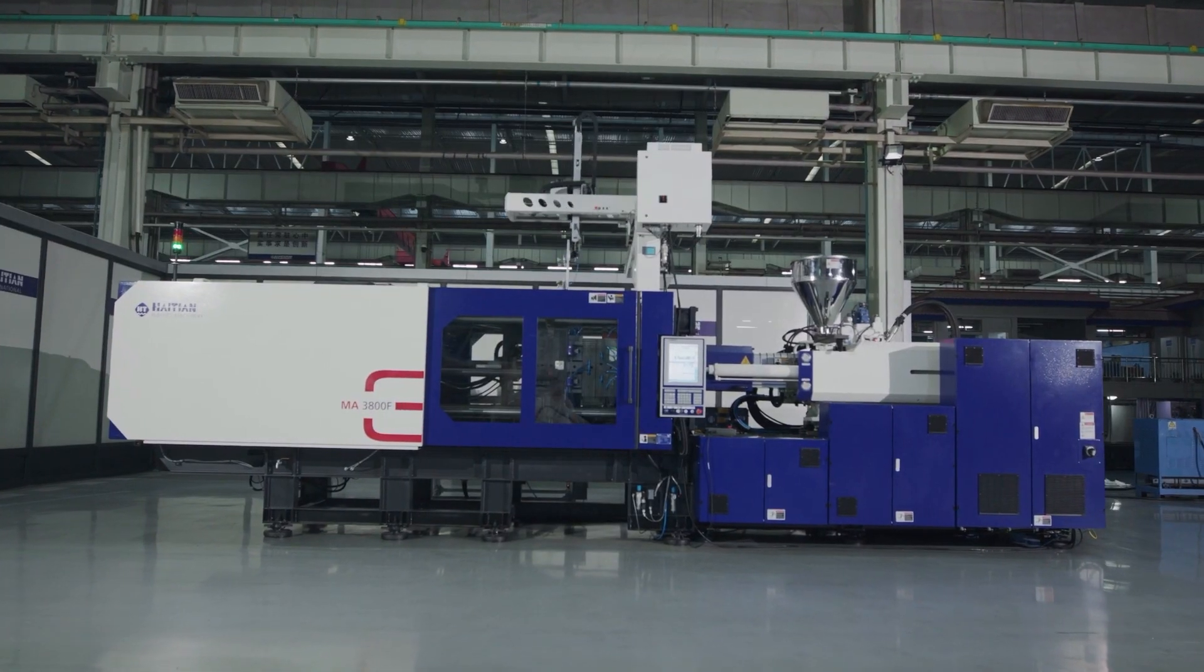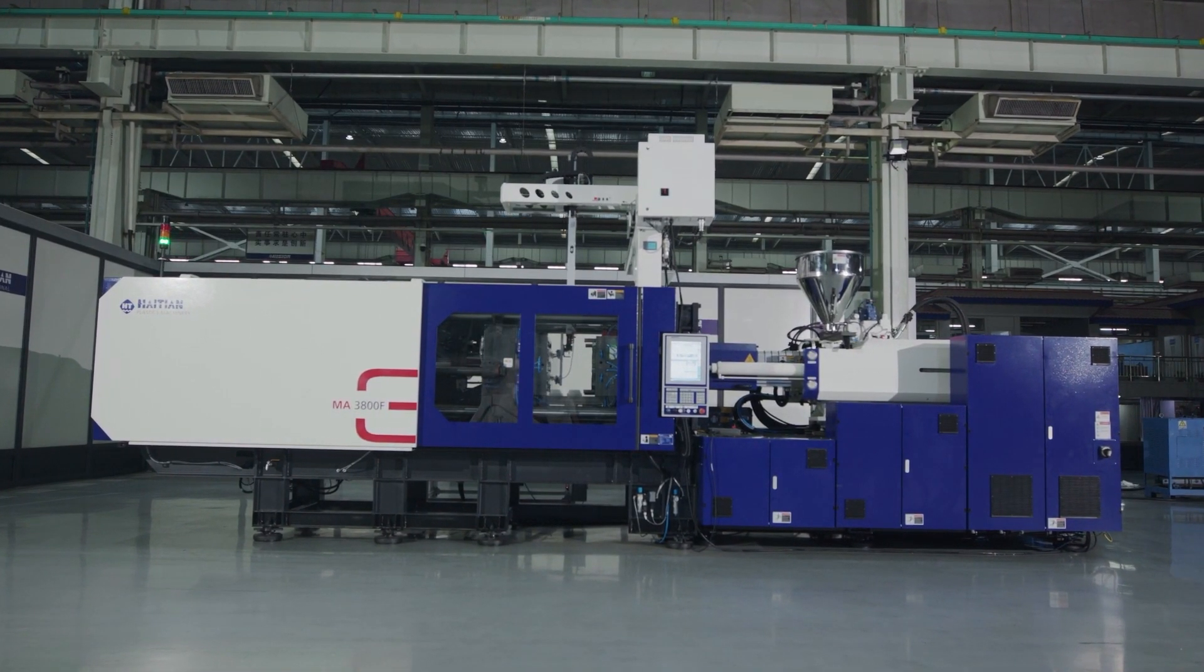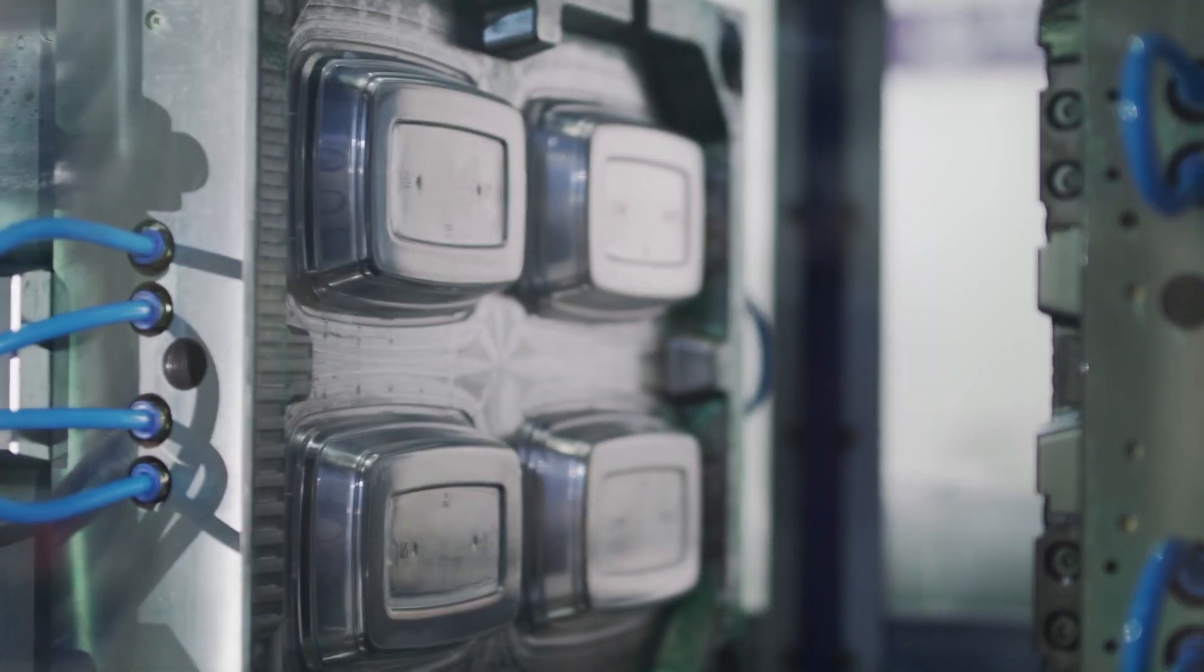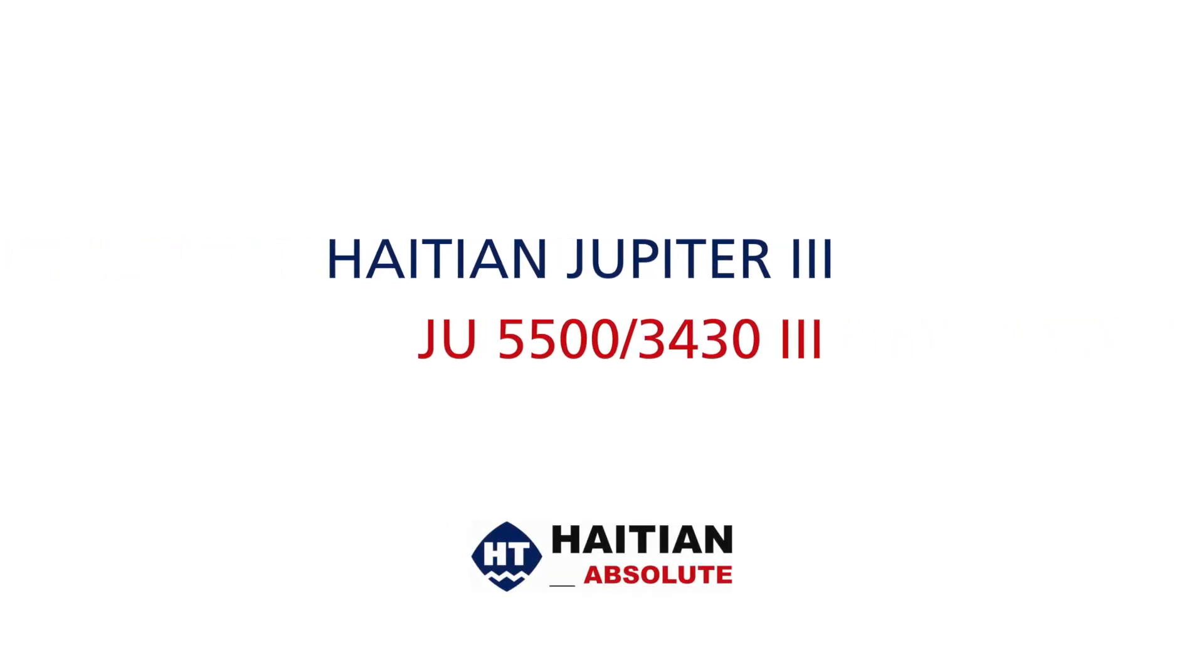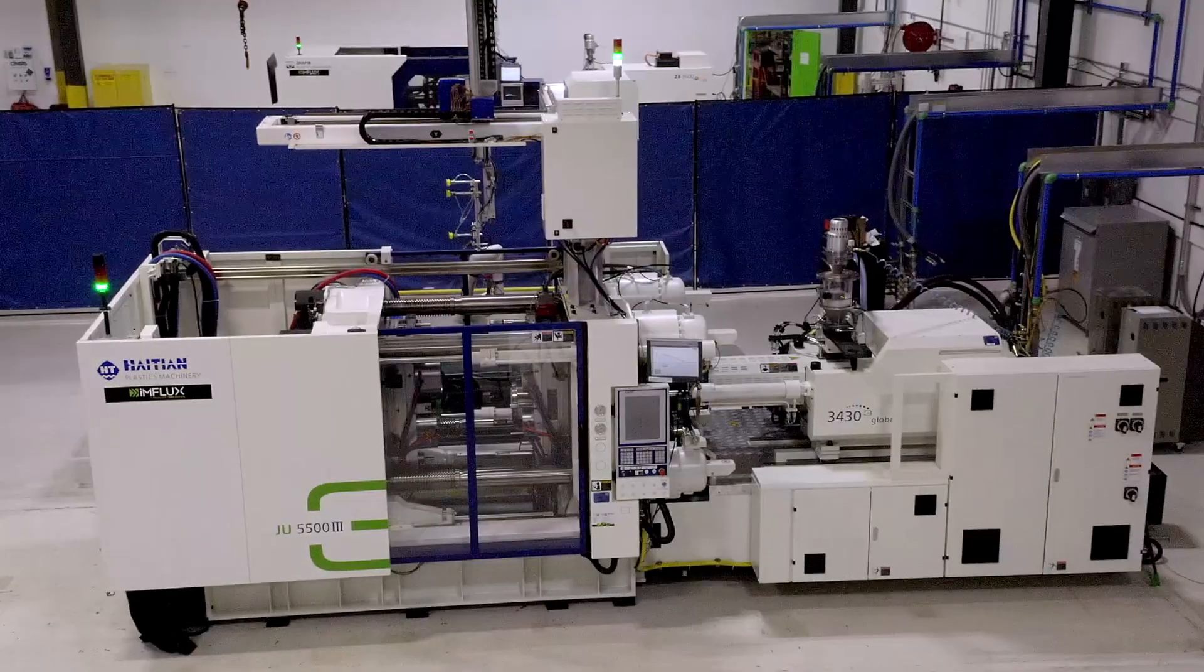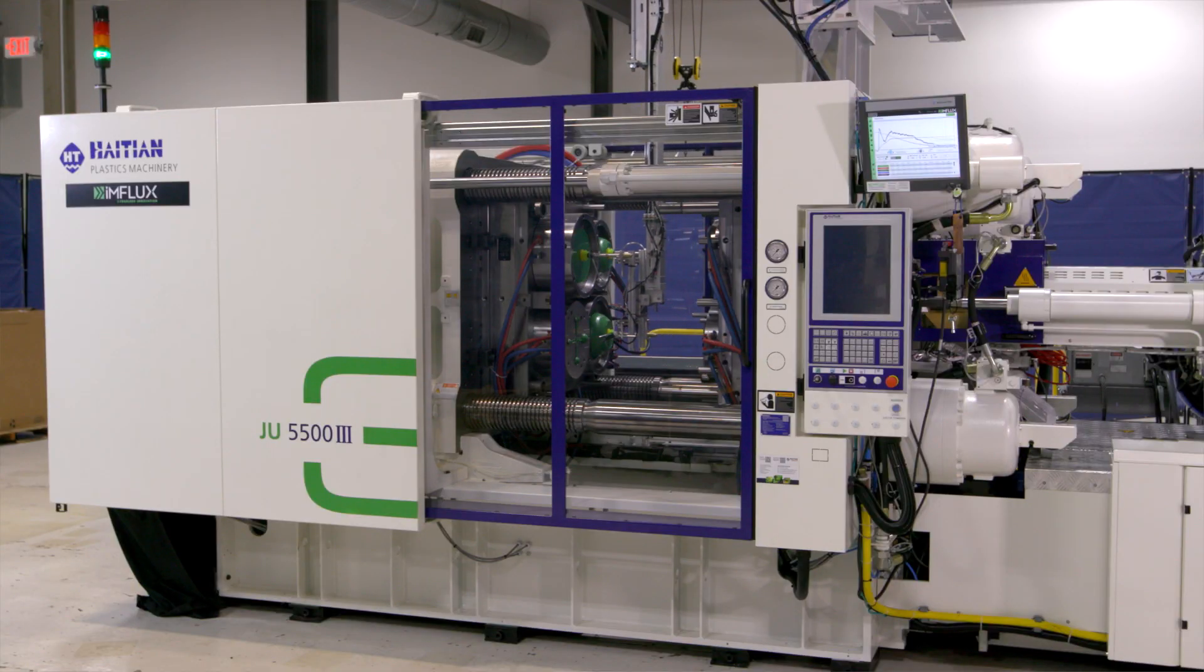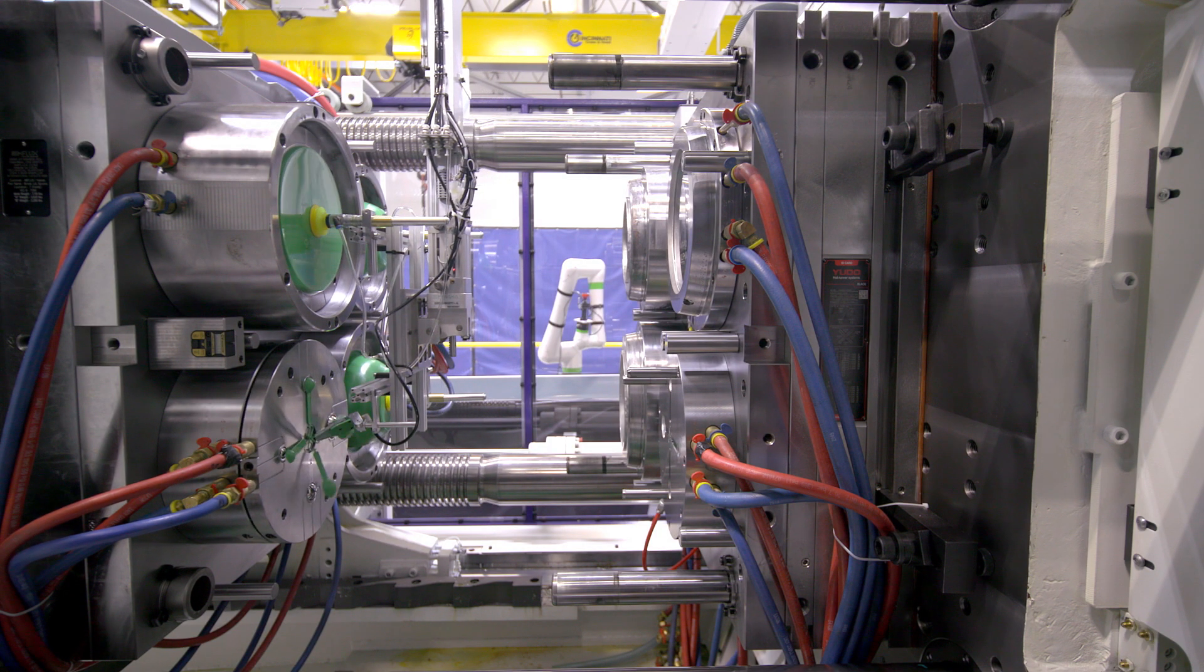On the right side of our virtual trade show are Haitian servo-hydraulic molding machines. Explore the Mars 3F fast cycling molding machine running a high-speed food container mold. Next to that is our two-platen Jupiter 3 integrated with Influx processing technology running a post-consumer recycled material in a housewares family mold application.